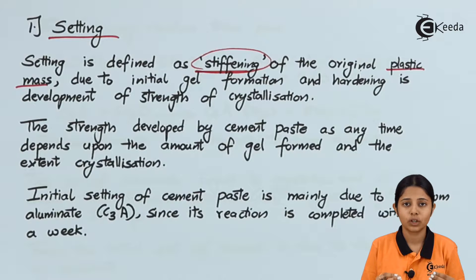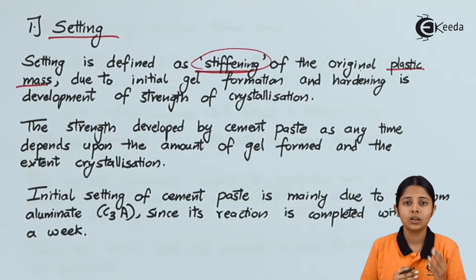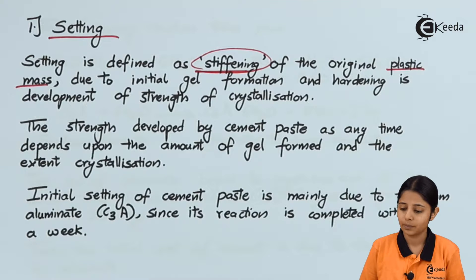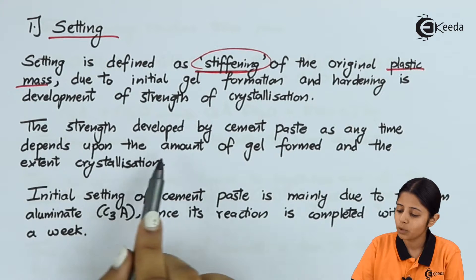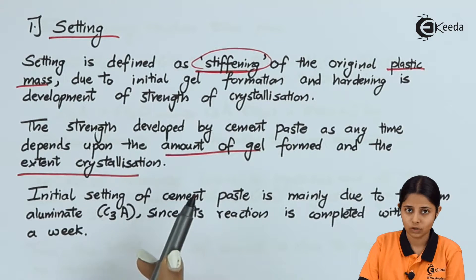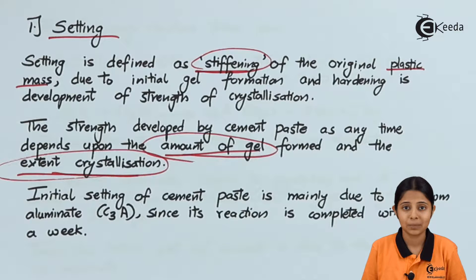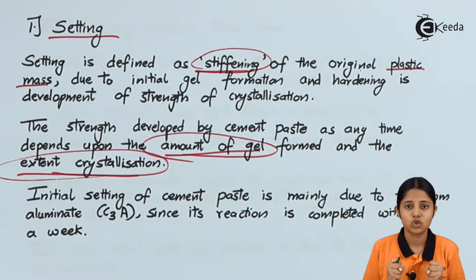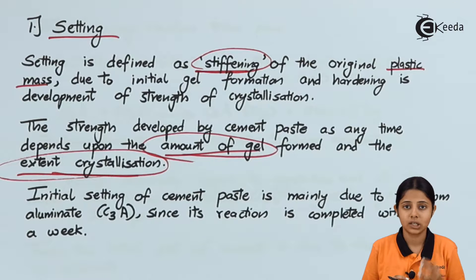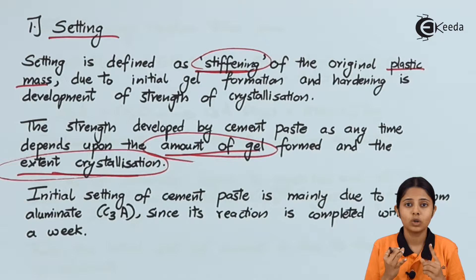Hardening is the development of strength due to crystallization. Whenever we make any cement-related construction, setting always happens first and then hardening — there cannot be a reversal of these roles. The strength developed by the cement base at any time depends upon the amount of gel formed and the extent of crystallization. Crystals are hard, so the more crystallization, the greater the strength of the cement.